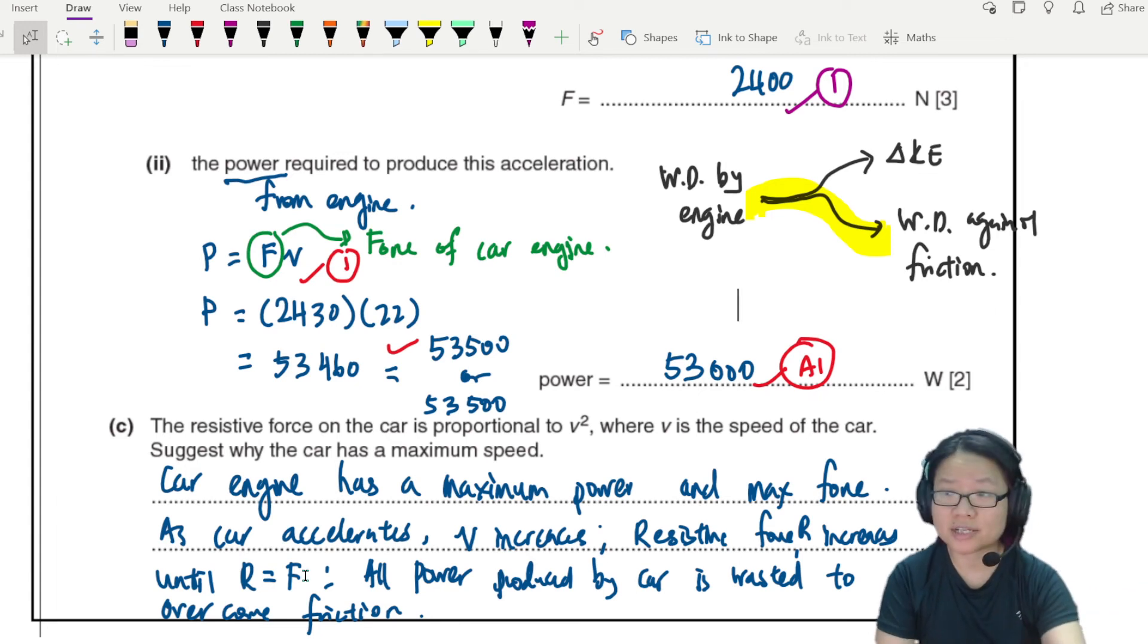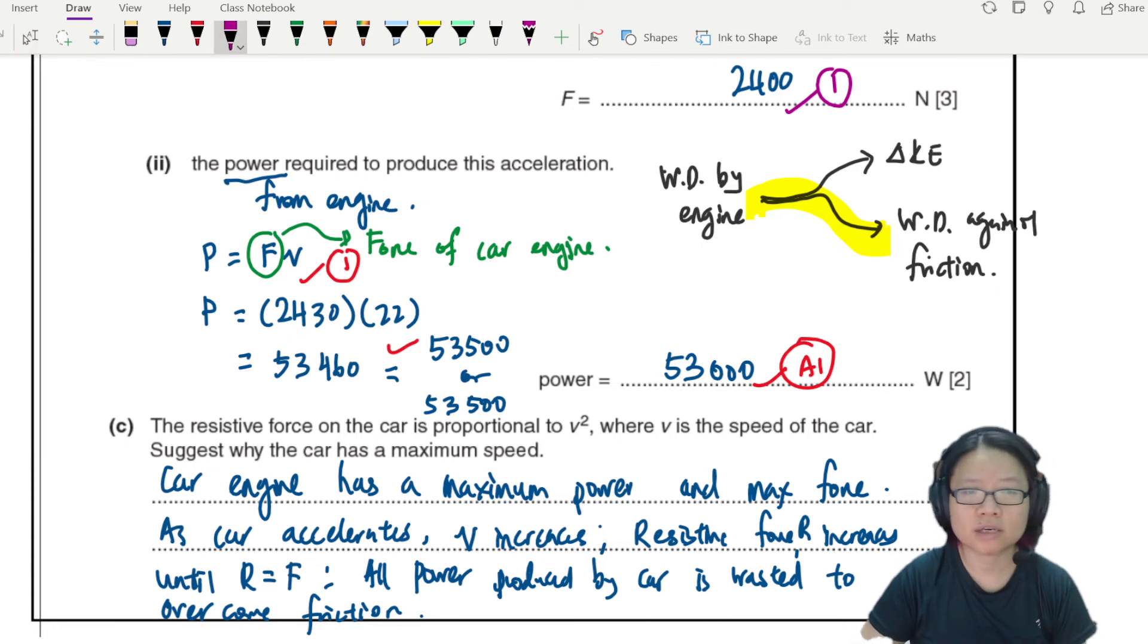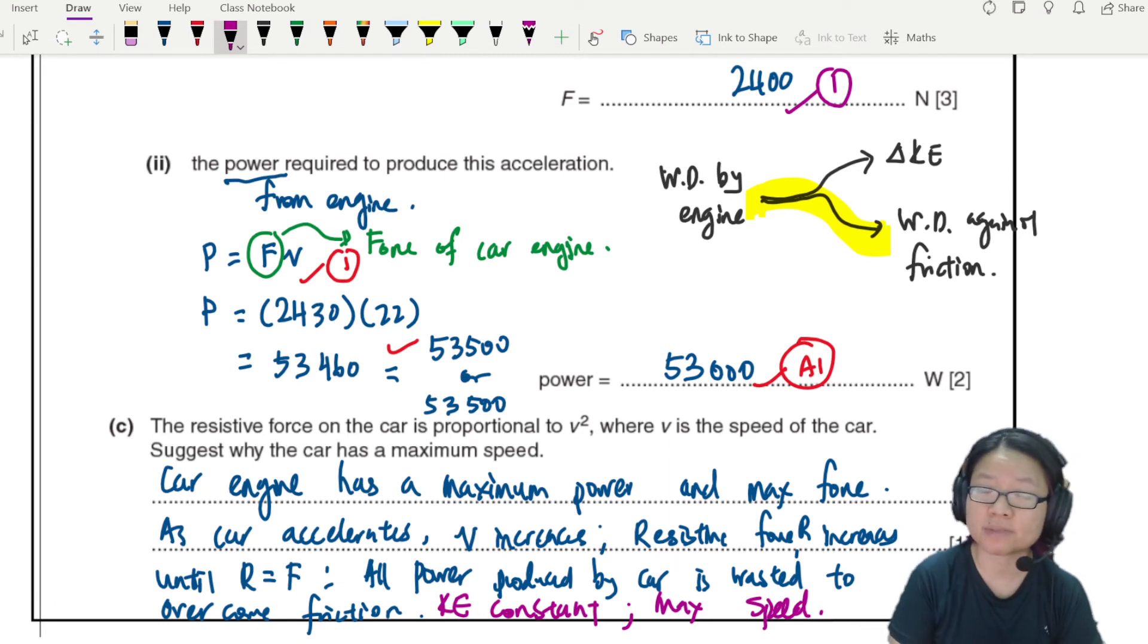the car is fast enough and the force of the engine is equal to friction. Net force zero, will not accelerate, speed maximum. Or all power produced by the car is wasted to overcome friction, meaning your KE is constant. This is maximum speed. Miss, so much to write for one mark? No la, I write the full explanation so you understand. But the keyword here to mention is just